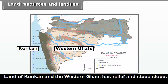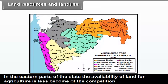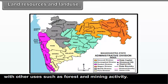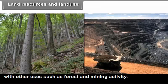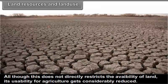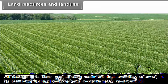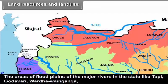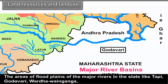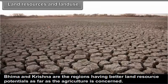Land of Konkan and the Western Ghats has high relief and steep slope, which limits the availability of land for agriculture. In the eastern parts of the state, the availability of land for agriculture is less because of the competition with other uses such as forest and mining activity. The central Maharashtra receives low rainfall, which considerably reduces the usability of land for agriculture. The areas of floodplains of major rivers like Tapi, Godavari, Wardha, Ganga, Bhima and Krishna are the regions having better land resource potentials for agriculture.